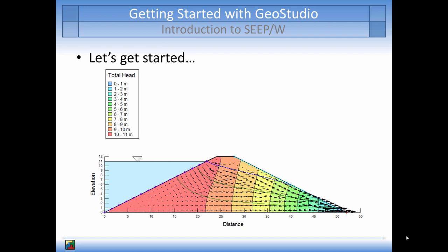Here you can see some results of a steady-state seepage analysis that was conducted in SeapW. The results include total head contours, velocity vectors, flow paths in green, and the location of the phreatic surface or zero pressure contour as a blue dashed line. We will now go through the step-by-step instructions for creating this analysis in SeapW. You can also view the SeapW tutorial file available on our website, which was recreated using these steps.